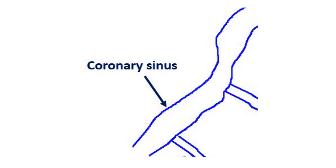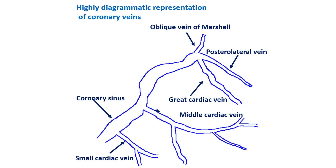The coronary sinus is the largest cardiac vein with multiple tributaries. It is located in the left posterior atrioventricular groove and empties directly into the right atrium through the coronary sinus ostium. Tributaries of the coronary sinus include the great cardiac vein, middle cardiac vein, small cardiac vein, left posterior left ventricular vein, and oblique cardiac vein.